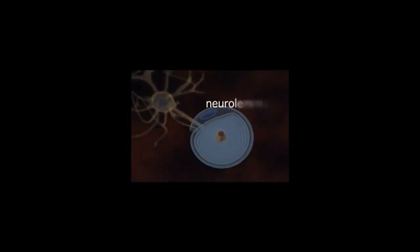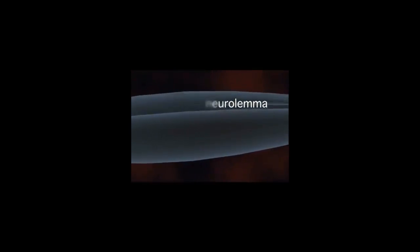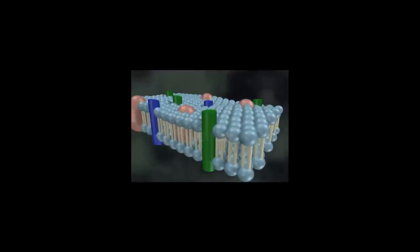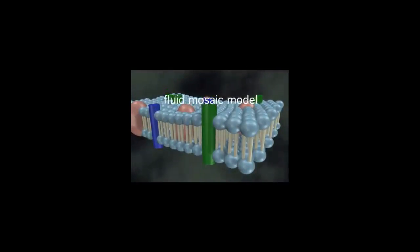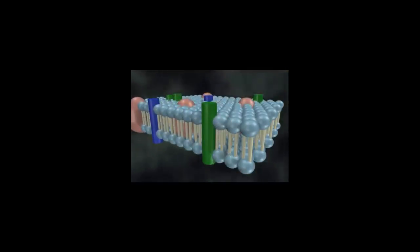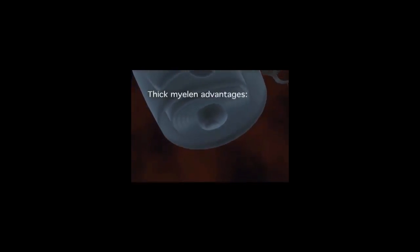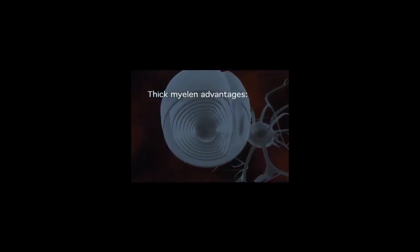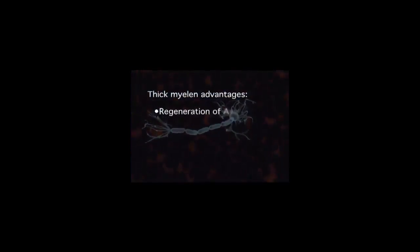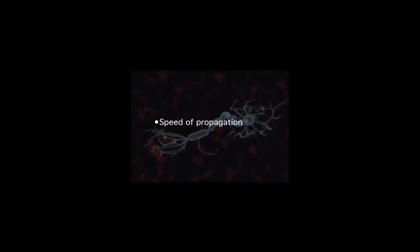The outer wrapping of the Schwann cell is called the neurolemma. The inner lining is made up of layers upon layers of cell membrane, called the myelin sheath. You will recall that the cell membrane, the fluid mosaic model, is made up of a bilayer of lipids integrated with proteins. The thicker the myelin — in other words, the more layers of cell membrane — the more advantageous it is to the axon. One advantage is the regeneration of severed axons; another is an increase in the speed of propagation of the action potential along the axon.